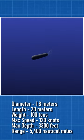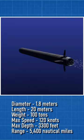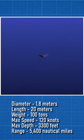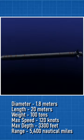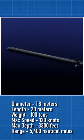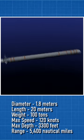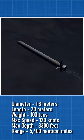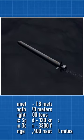Known characteristics of Poseidon: 1.8 meters in diameter, 20 meters in length, weight 100 tons. Maximum speed of 110 knots. Diving depth up to 3,300 feet. Range of 5,400 nautical miles.